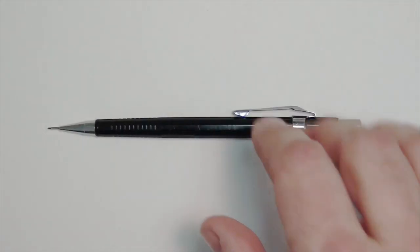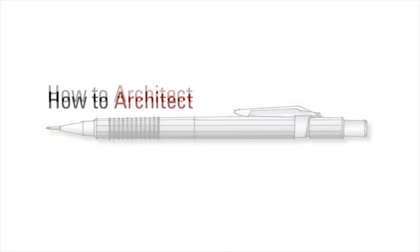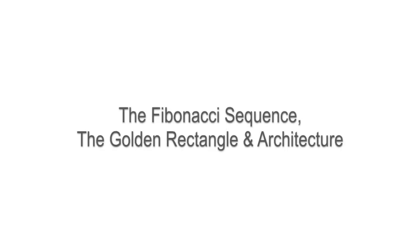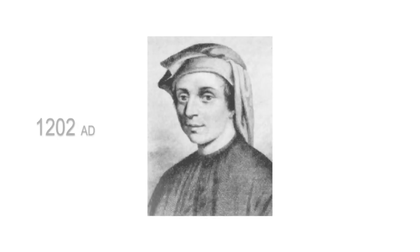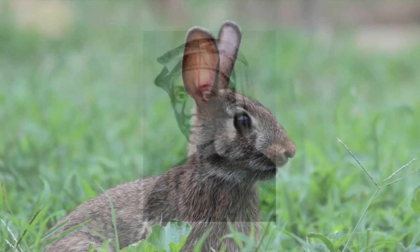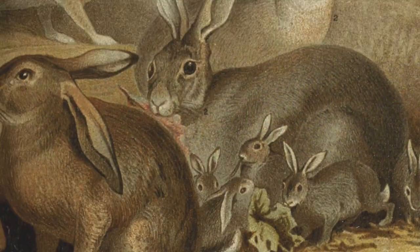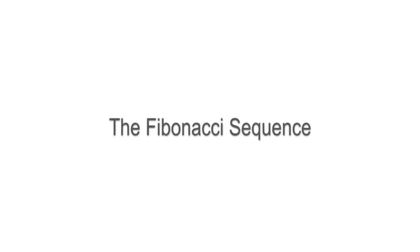Hi, I'm Doug Pat, and this is how to architect the Fibonacci sequence, the golden rectangle, and architecture. In 1202, Leonardo Fibonacci was famously investigating rabbit reproduction and made note of a sequence that is now known as his namesake: the Fibonacci sequence. The sequence is a series of numbers derived by adding each number to the previous.